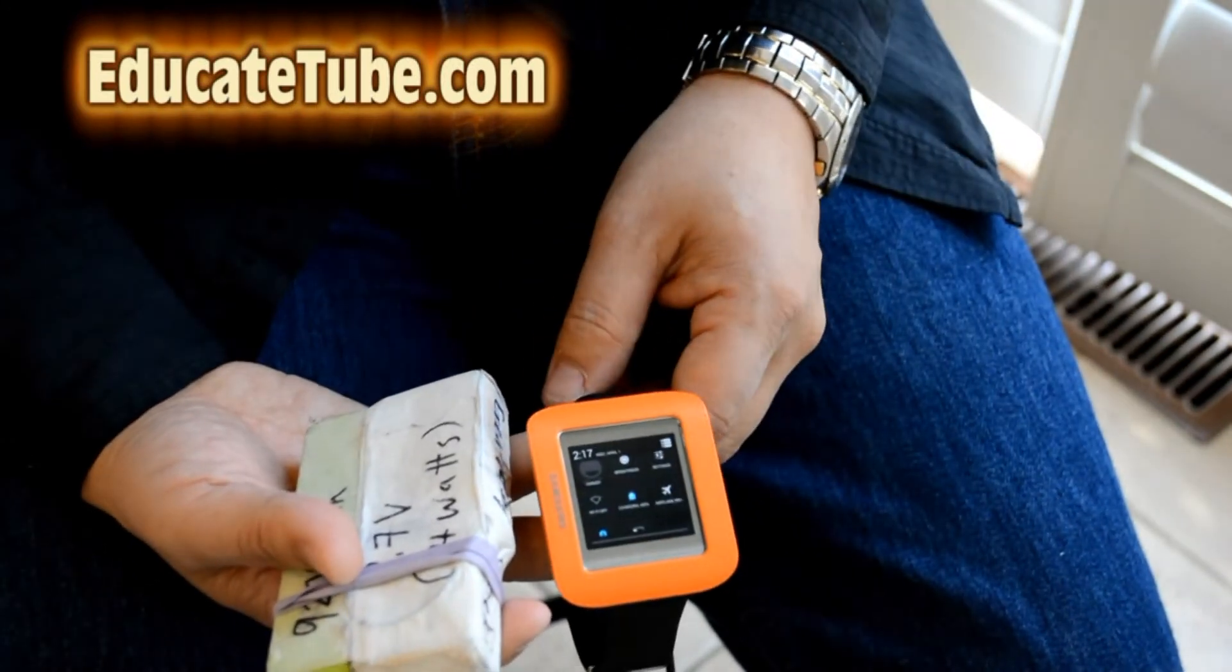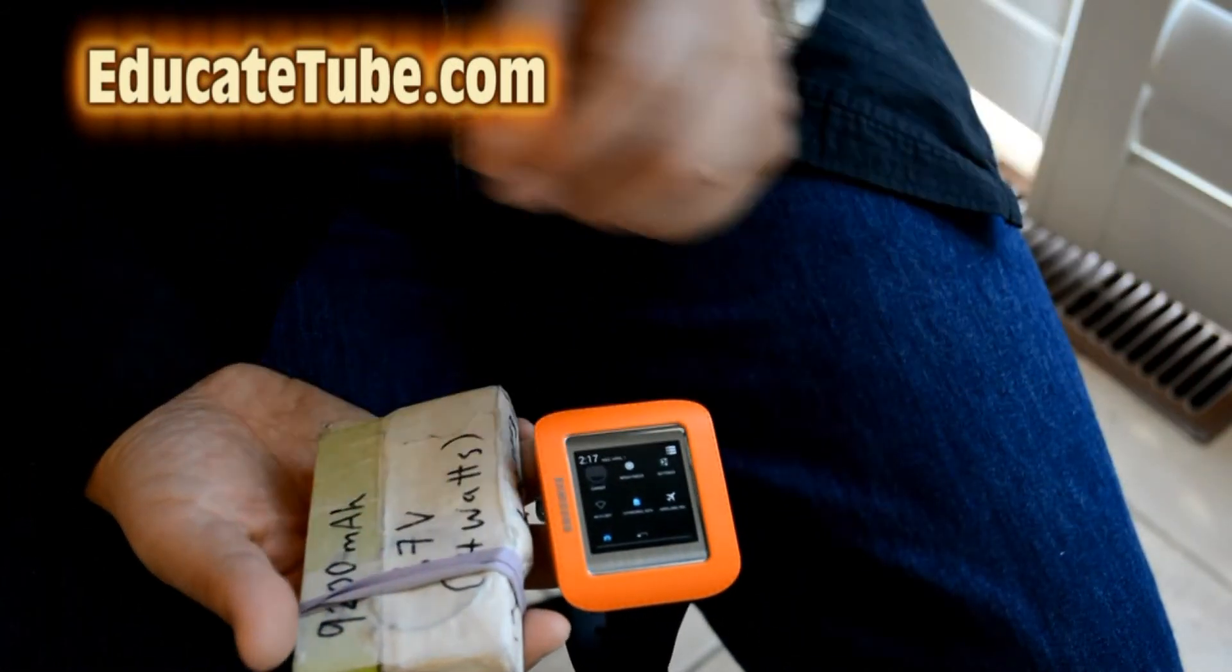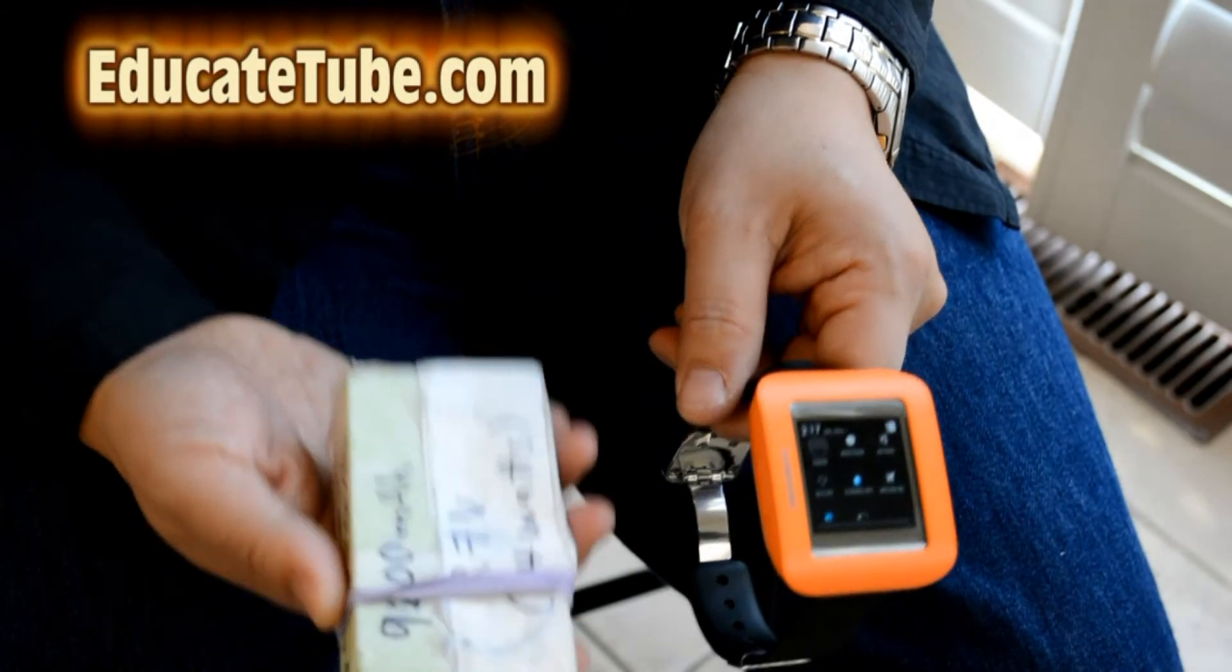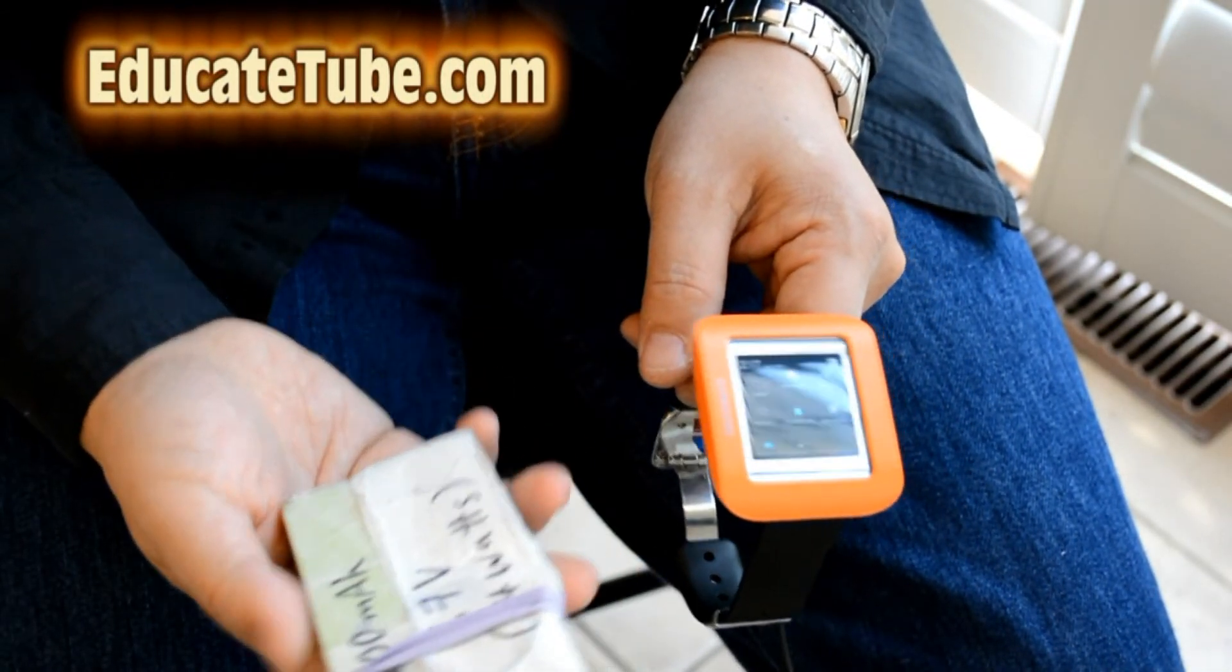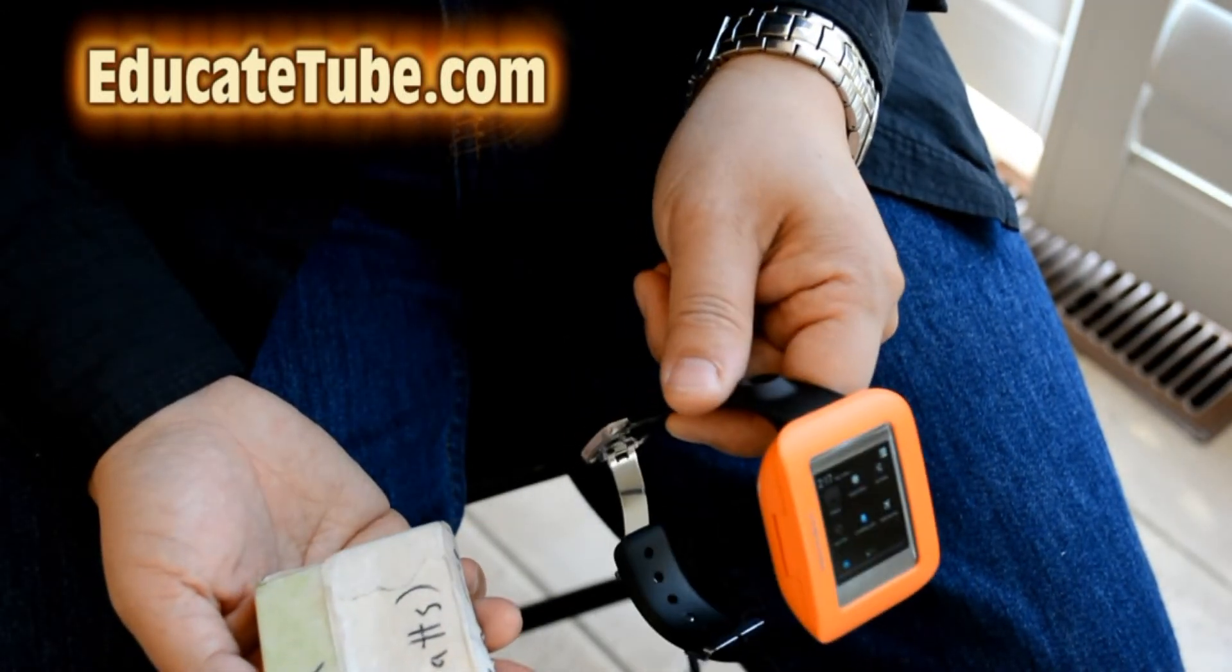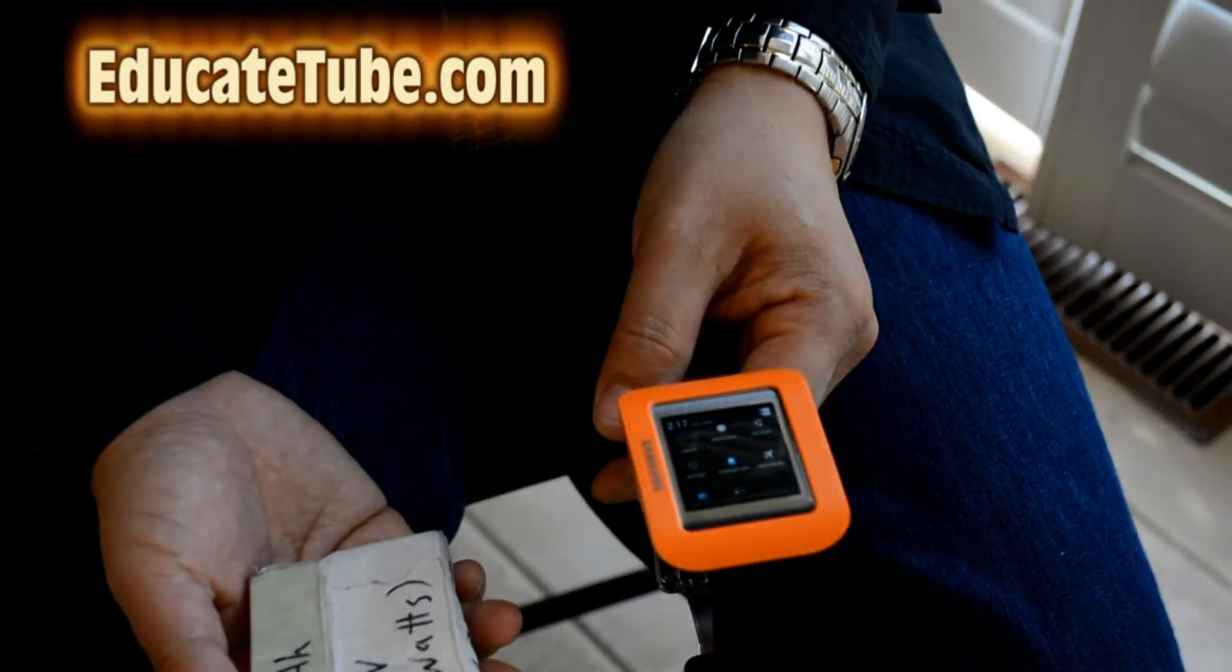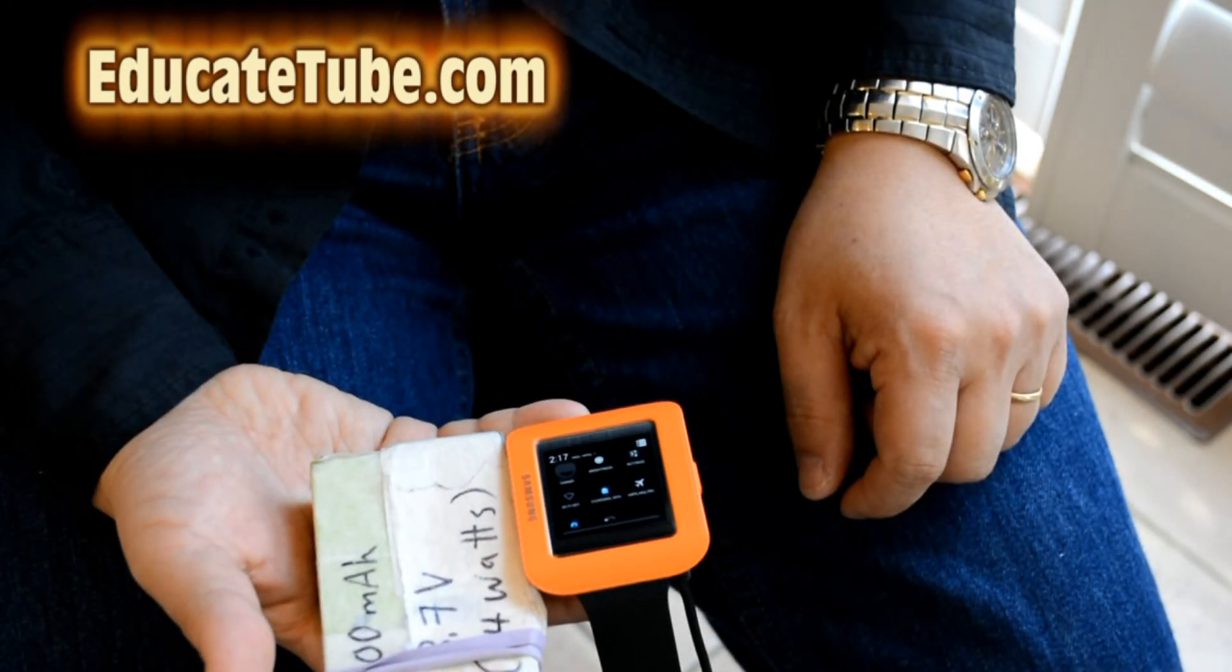So the thing with smartwatch is that its battery life may be short, but you can easily extend it with a battery pack system. It uses only one watt, but yet, with a 30 watt plus battery pack system, you can charge this thing for over, I would say, six to eight weeks. Not bad at all. Especially if it's a type 2 smartwatch, right? Alright, thanks for watching, educate tube dot com.